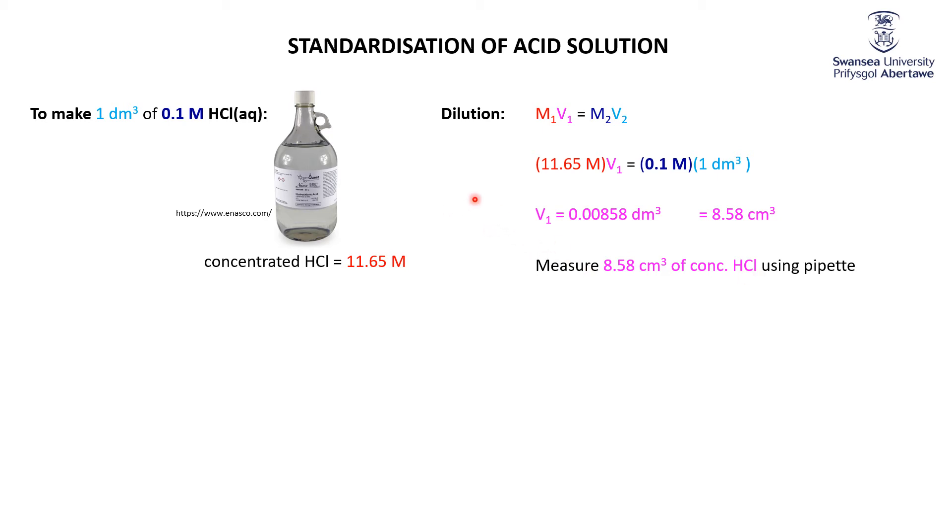So we take that concentrated hydrochloric acid and we add it to some water. If we want to make a liter of the dilute solution, we're not going to add it to a liter. We'll add it to 100 cubic centimeters, 200 cubic centimeters, whatever might be convenient. And then we make it up to one liter using a volumetric flask that looks like this.